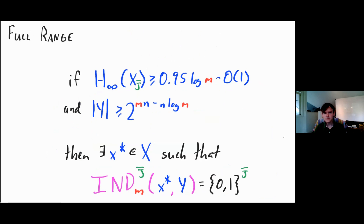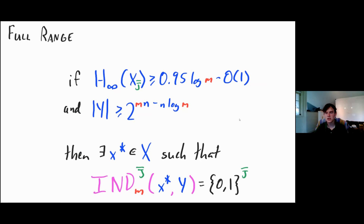The full range lemma states: if you have blockwise min entropy at least 0.95 log m minus order one on free coordinates, and |Y| is at least 2^{mn - n log m}, then there exists a specific row x-star in X such that the index gadget on free coordinates has full range on just that row — every assignment to free coordinates can be achieved by some y with that x-star.